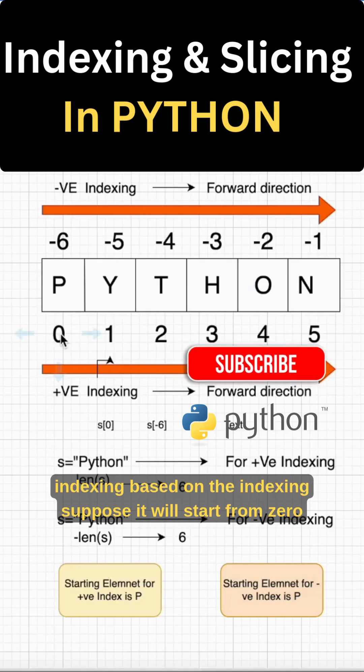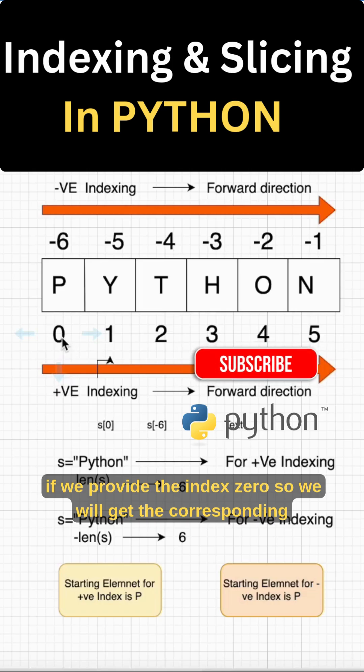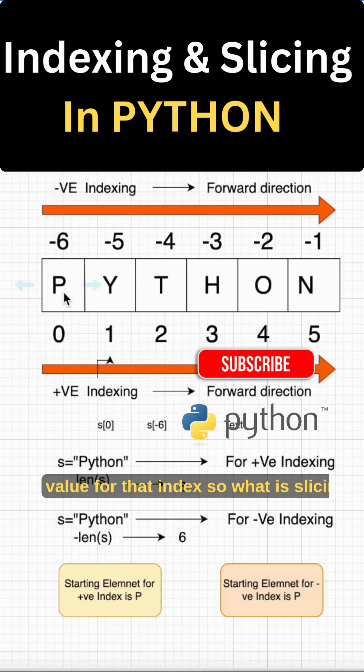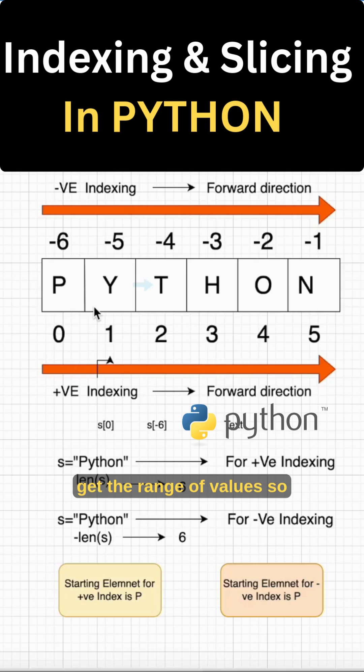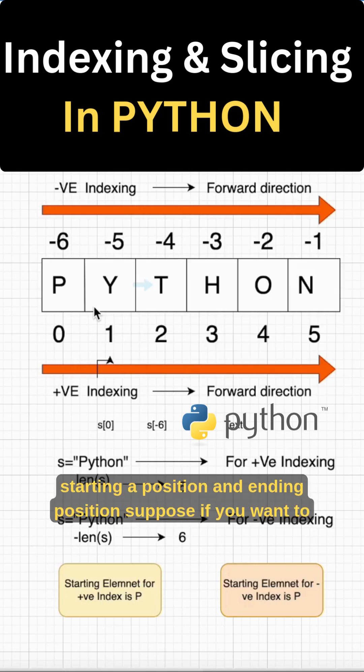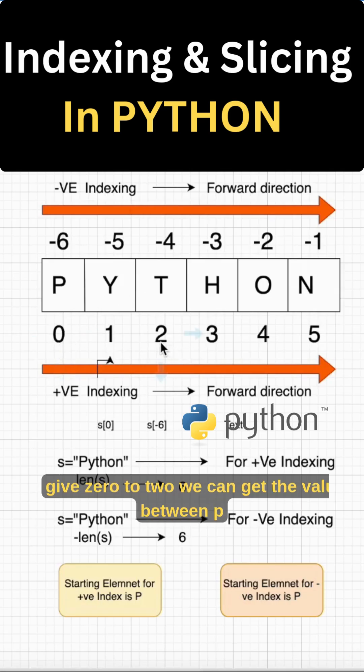Indexing based on the index. Suppose it will start from 0. If we provide the index 0, we will get the corresponding value for that index. So what is slicing? When we get the range of values, a starting position and ending position. Suppose if you want to give 0 to 2, we can get the values between P and Y.